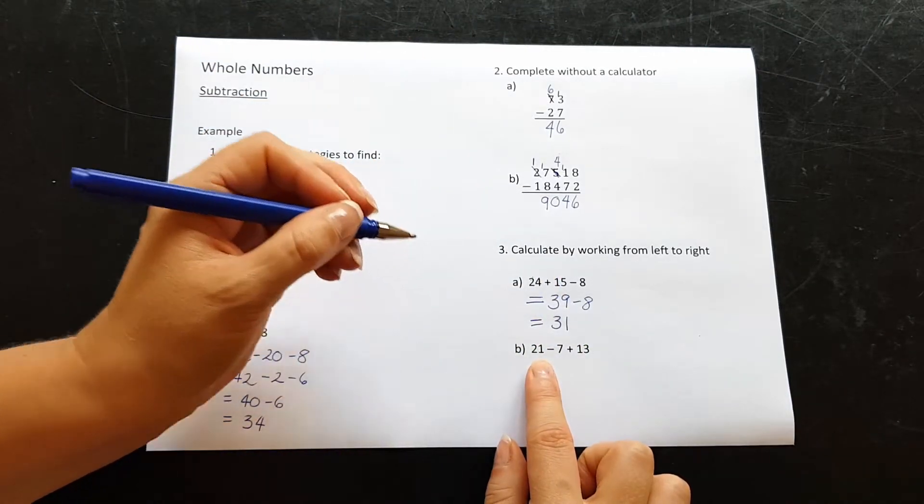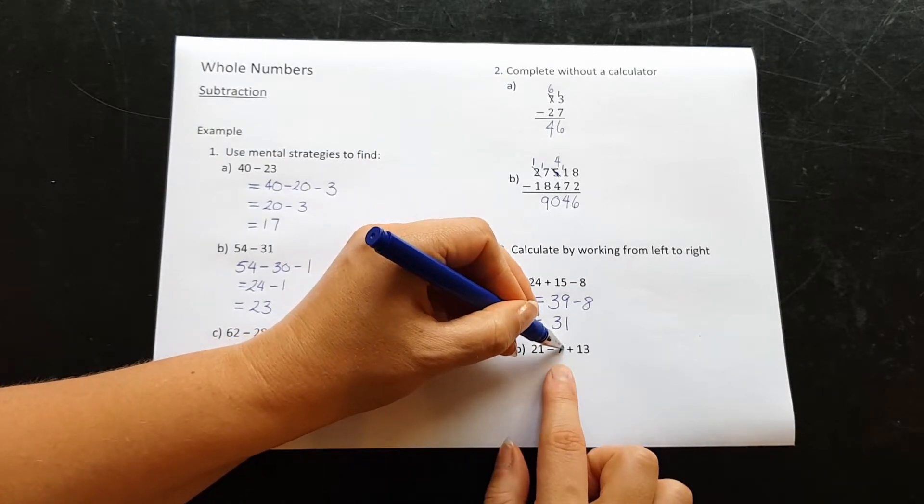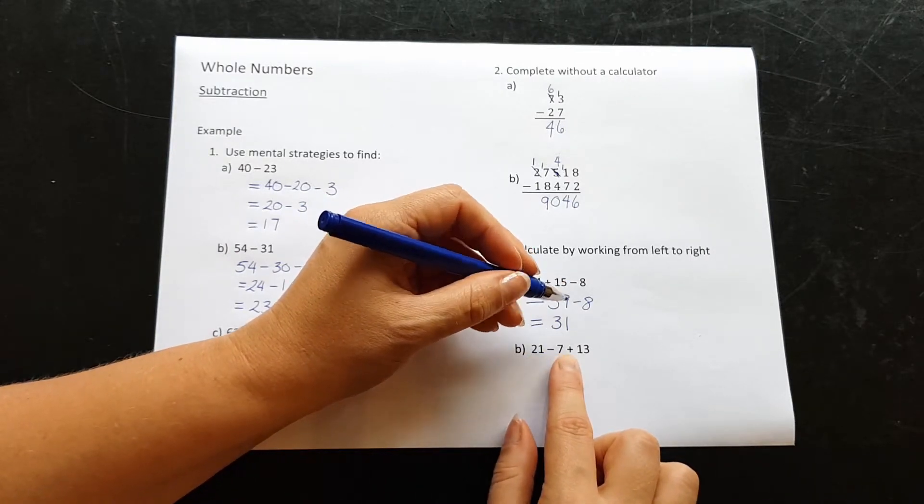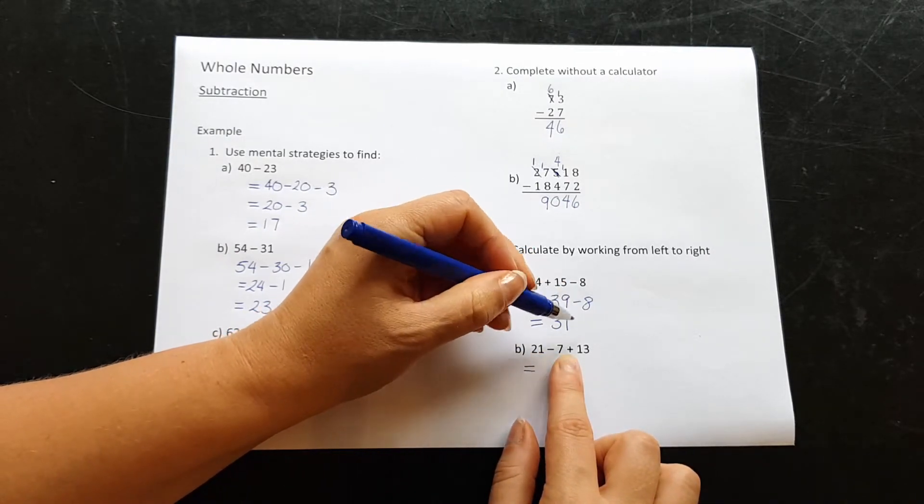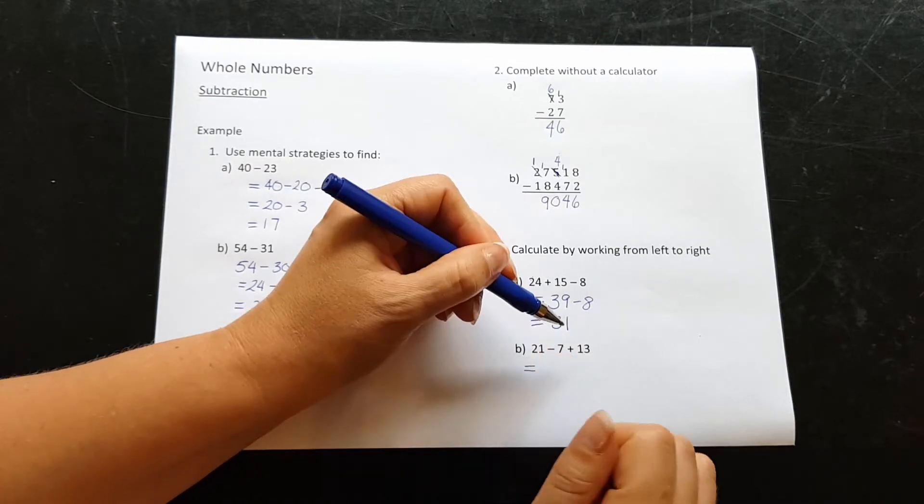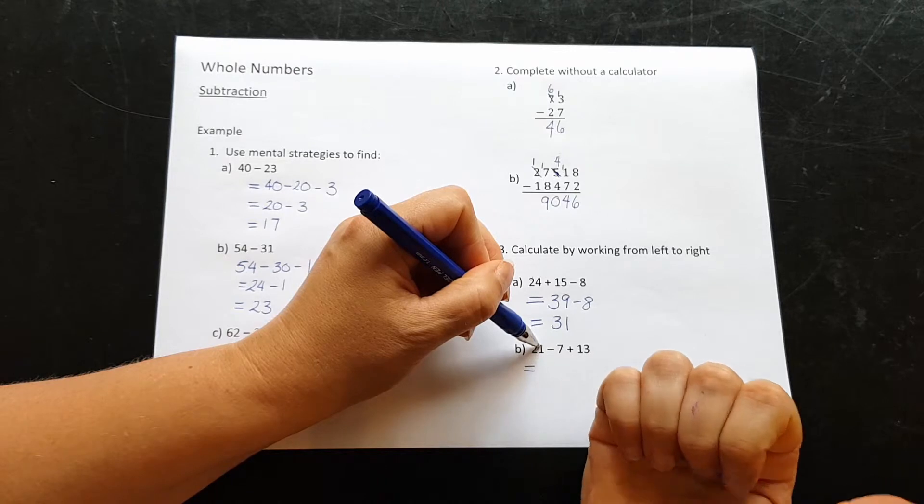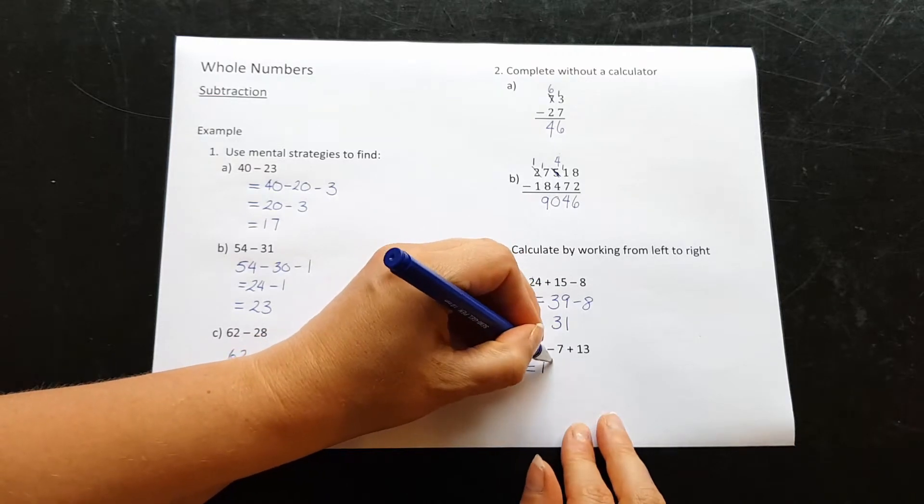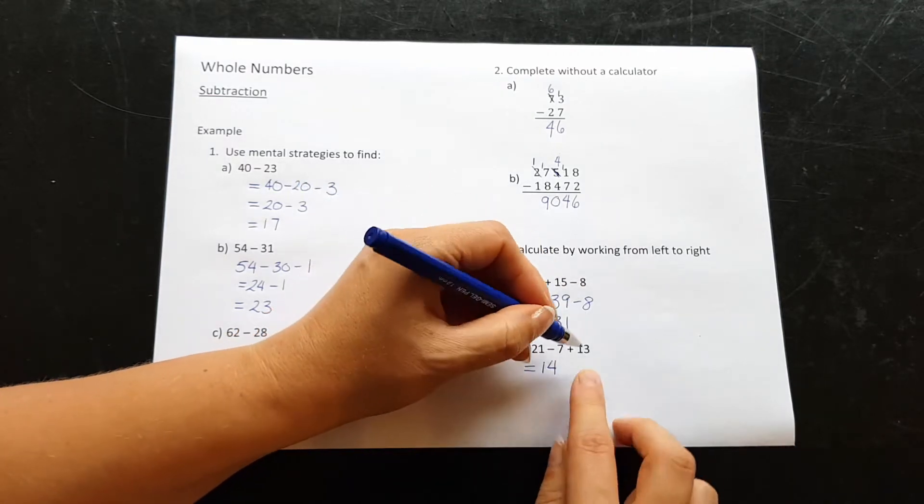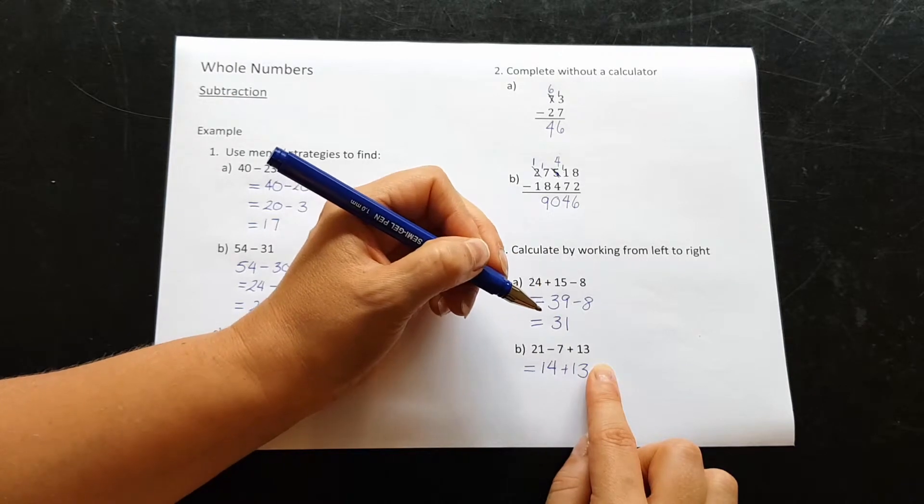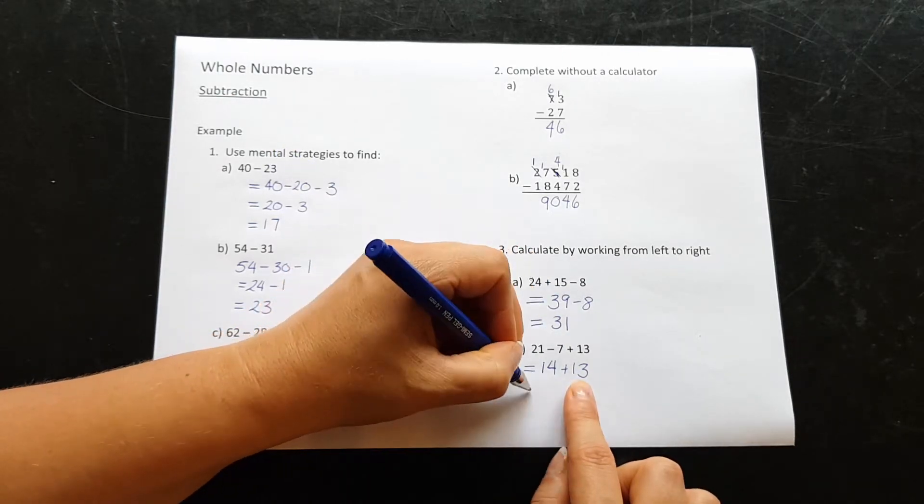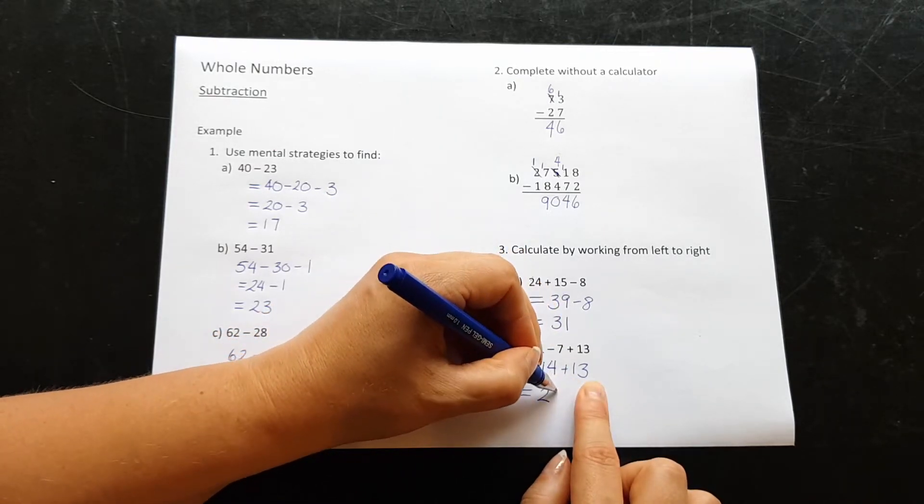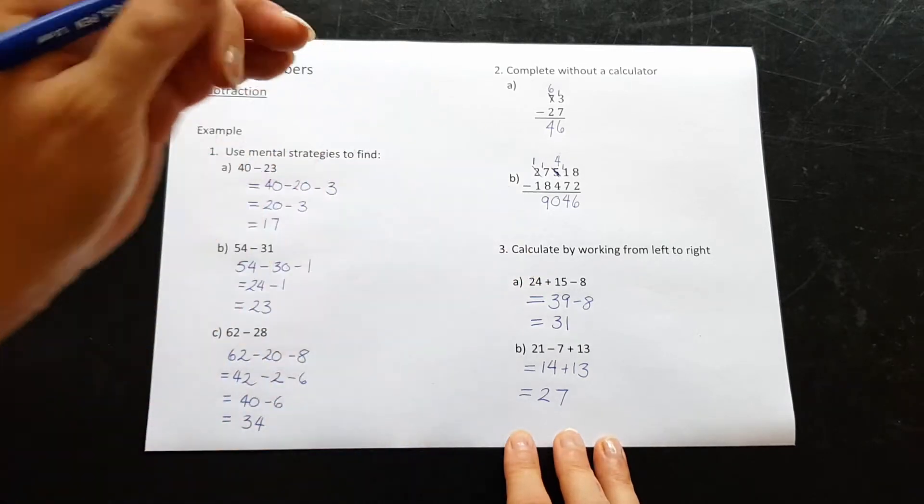For B, we have 21 take away 7 plus 13. So I have to do these ones first. 21 take away 7. Let's count backwards by 7. Starting at 21, counting back 7 gives us 14. And now I have to add on my 13. Let's add these together now. Adding the tens together, we get 20. Adding the ones together, 4 plus 3 is 7, so 27.